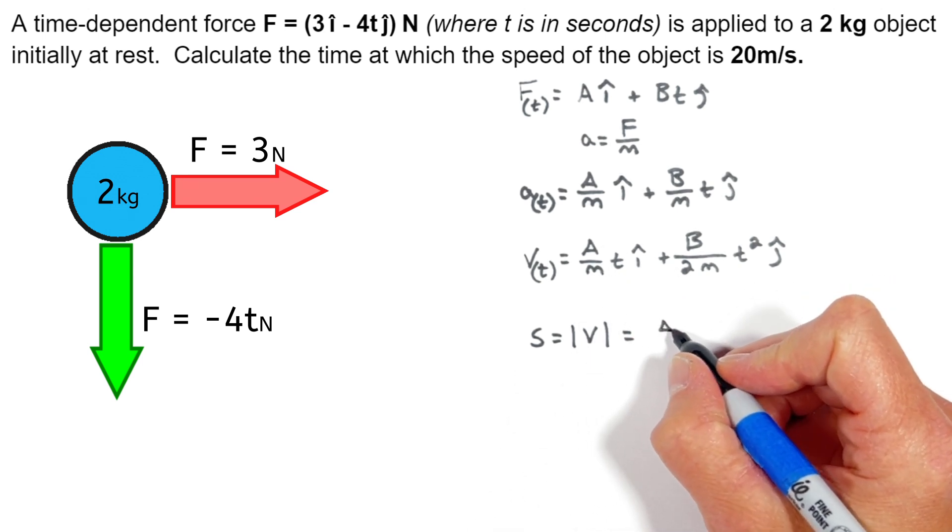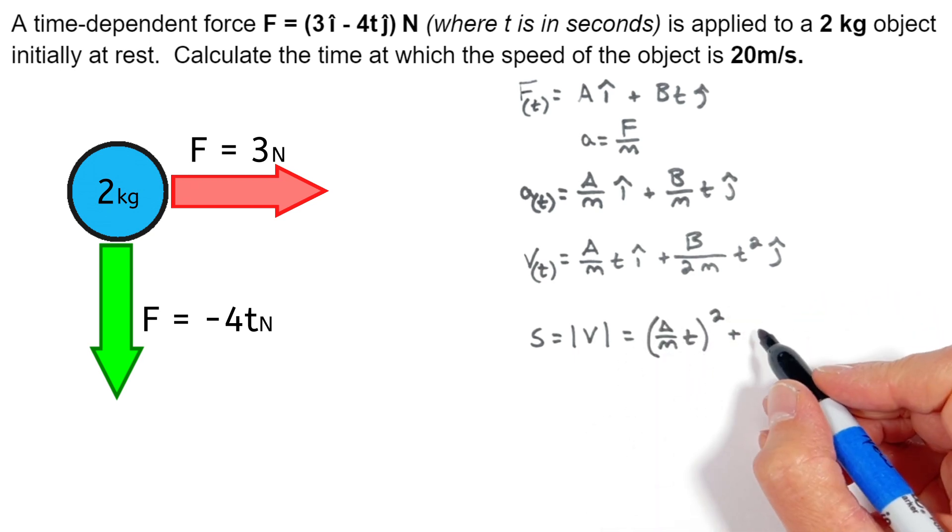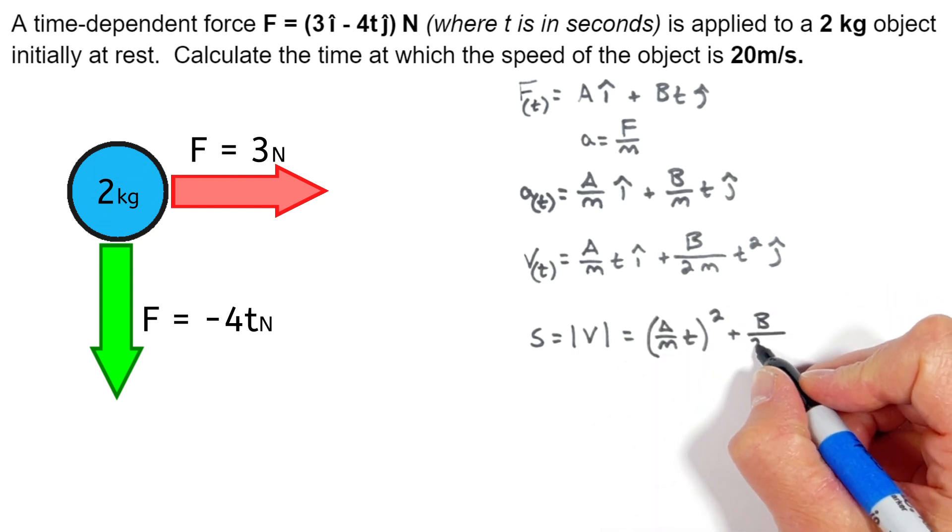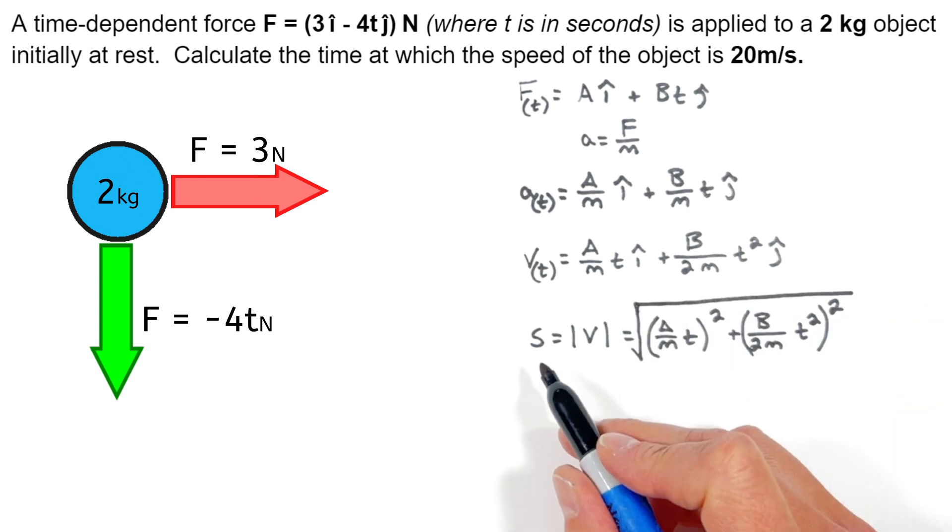So using this horizontal component right here, squared plus our vertical component, we can set that equal to our speed.